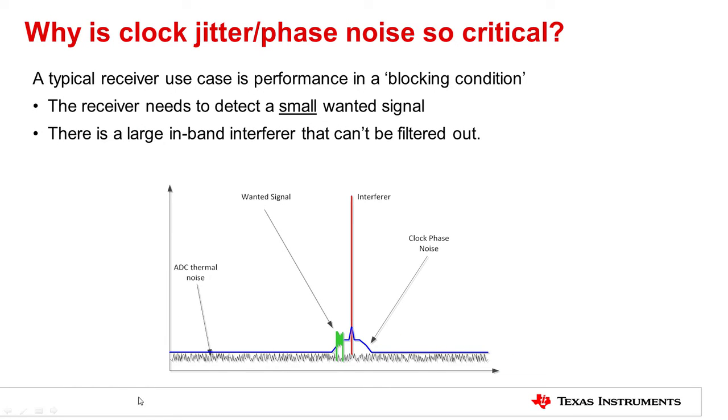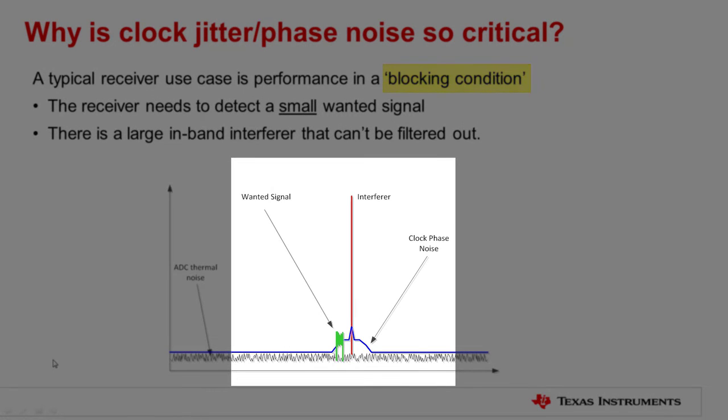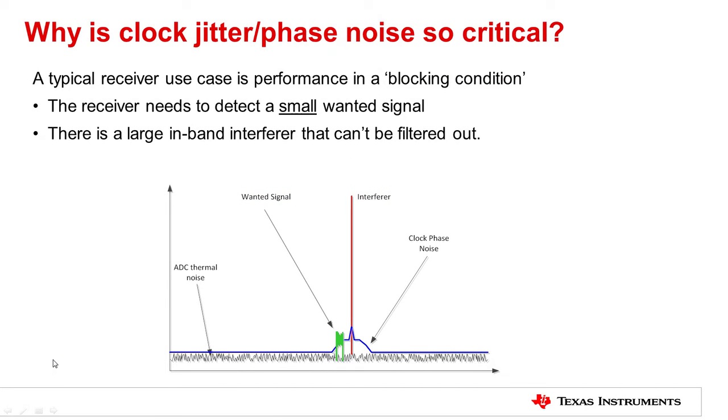So why is clock jitter or phase noise so critical to the receiver performance? A typical receiver use case is a blocking condition where the receiver needs to detect a small, wanted signal in the presence of a high-power in-band interferer. This interferer is inside the desired passband and therefore won't be filtered out. Since we can't overdrive or saturate the ADC input, the high-power interferer limits how much front-end gain can be applied to the small, wanted signal. Therefore, the noise floor of the ADC itself needs to be as low as possible.